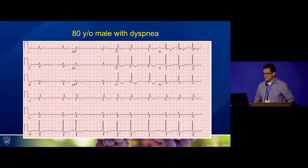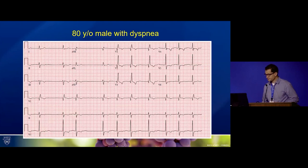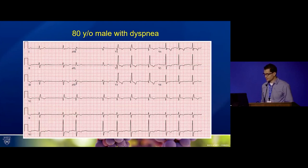Here's the electrocardiogram, showing irregular atrial fibrillation and a right bundle branch block pattern.